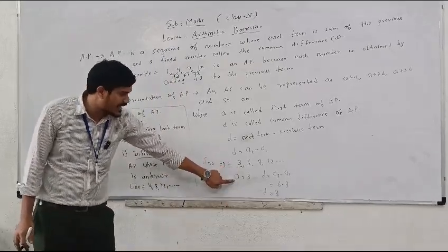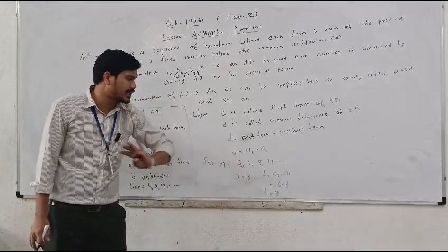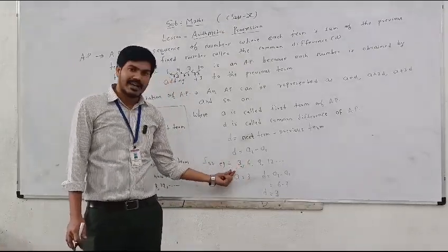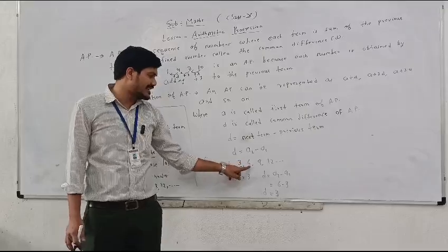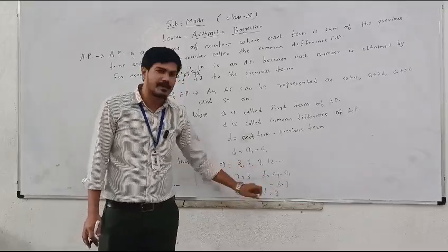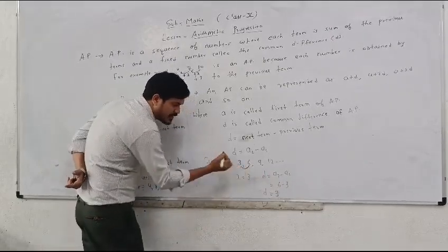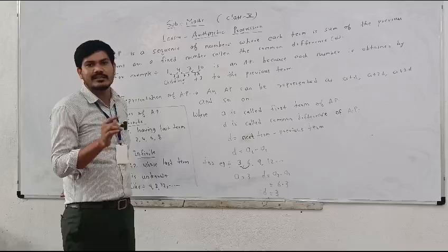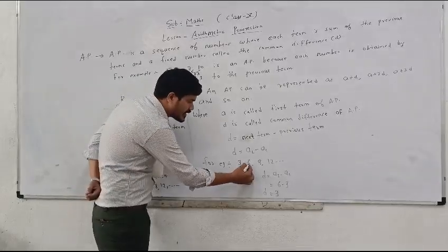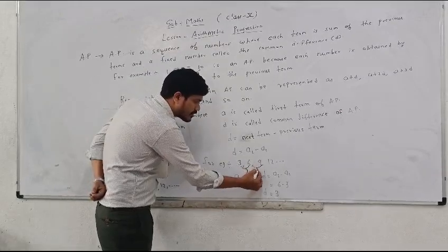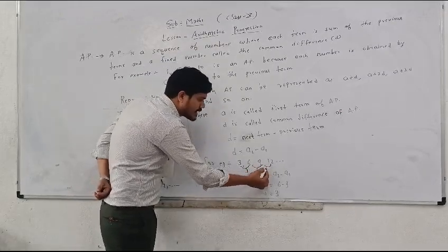The first term A equals 3. For finding the common difference, we take second term minus first term. So 6 minus 3 equals 3. Each series should have the same common difference to be called an AP. We can verify: 6 minus 3 is 3, 9 minus 6 is also 3, and 12 minus 9 is also 3.